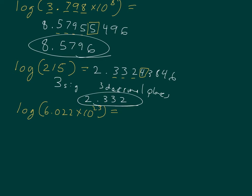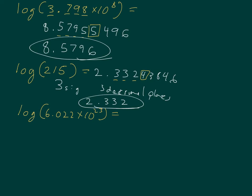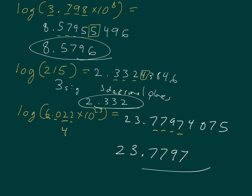One more, and then we're done going with logs this direction. We take the log of 6.022 times 10 to the 23rd, and our calculator tells us the answer is 23.77974075. The number we took the log of had 4 sig figs, so we need 4 decimal places: 1, 2, 3, 4. Round on the basis of the 4 there. Chemistry is easy, life is hard.